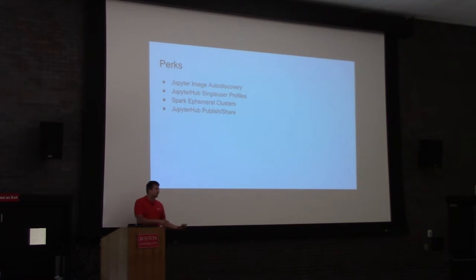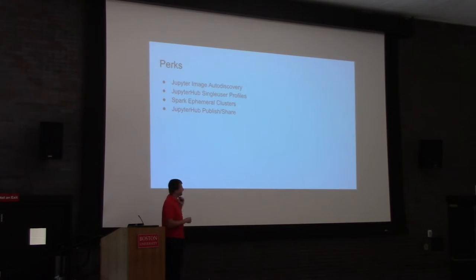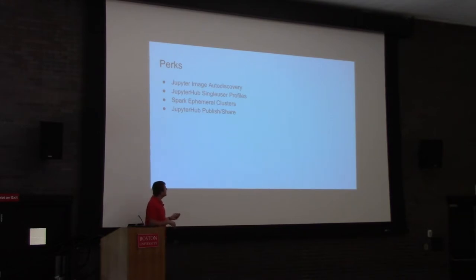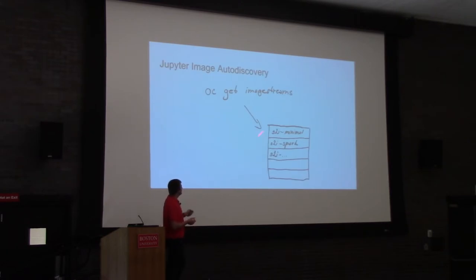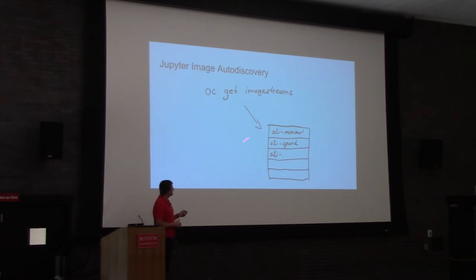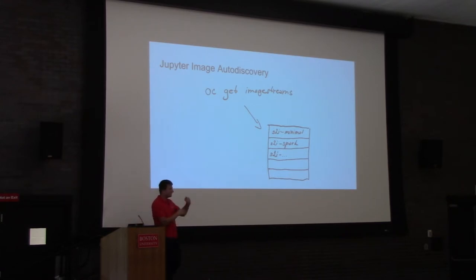What is special about our JupyterHub? I built my work on top of work by Graham, who has JupyterHub on OpenShift — JupyterHub Quick Start — and I just took that and built something on top. The main differences are essentially these four things: image auto-discovery, single-user profiles, Spark clusters, and publish-and-share. For image auto-discovery: that select box for the images is automatically generated from the images that are built in OpenShift. The UX isn't great right now, but I'm planning to improve it with descriptions and dependency info.